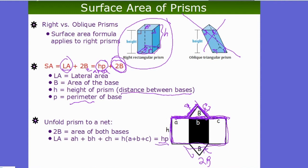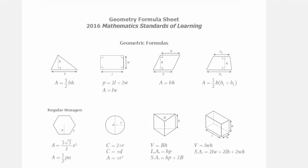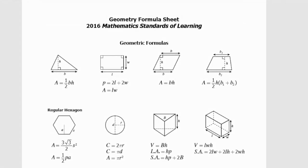So to summarize: the surface area of any prism equals HP + 2B, where H is the height of the prism — the distance between the bases — P is the perimeter of the base, and uppercase B is the area of the base.